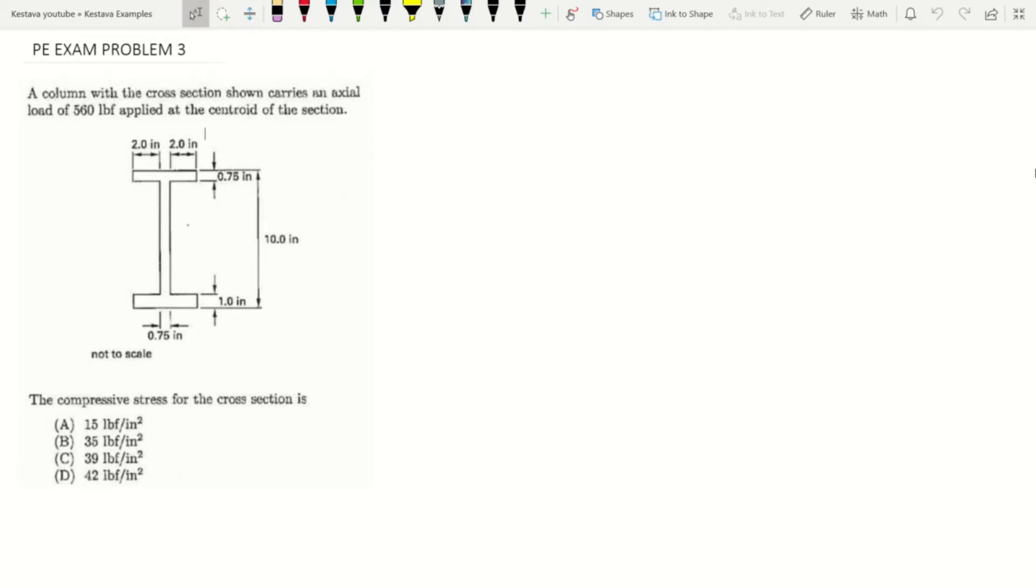A column with the cross section shown carries an axial load of 560 pounds applied at the centroid of the section. The compressive stress for the cross section is what? It's always good when studying to really understand and not jump the gun. What is the problem asking? It's asking for stress.